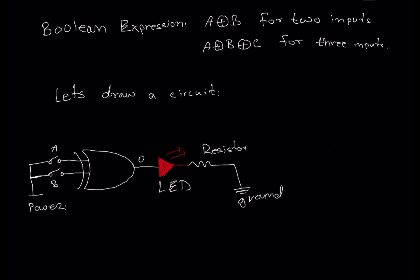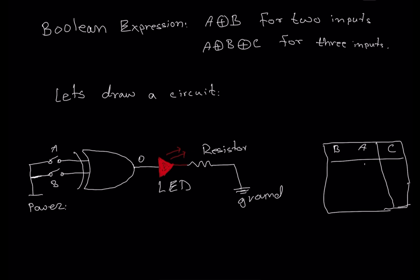To summarize in a truth table: since we have two inputs, our number of possibilities is four. We have input A and input B, and the output I'll call C. If input A is low and input B is high, the output will be high — because it's exclusively OR. Since one input is high, that is an odd number of inputs high, so the output is high.